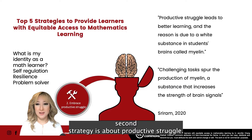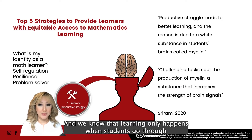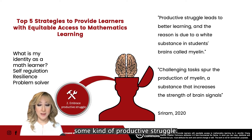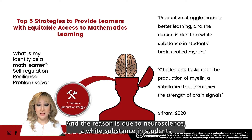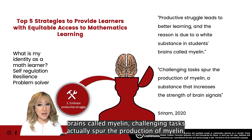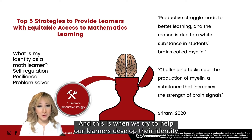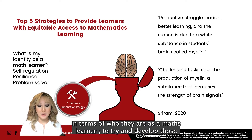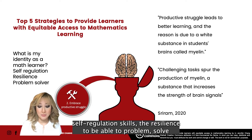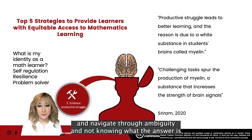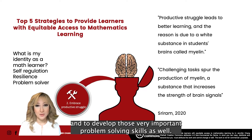The second strategy is about productive struggle. Learning only happens when students go through some kind of productive struggle — in fact, productive struggle leads to better learning. The reason is due to neuroscience: a white substance in students' brains called myelin. Challenging tasks actually spur the production of myelin, a substance that increases the strength of brain signals. This is when we help learners develop their identity as math learners, develop self-regulation skills, resilience to problem solve, navigate through ambiguity, and develop important problem-solving skills.